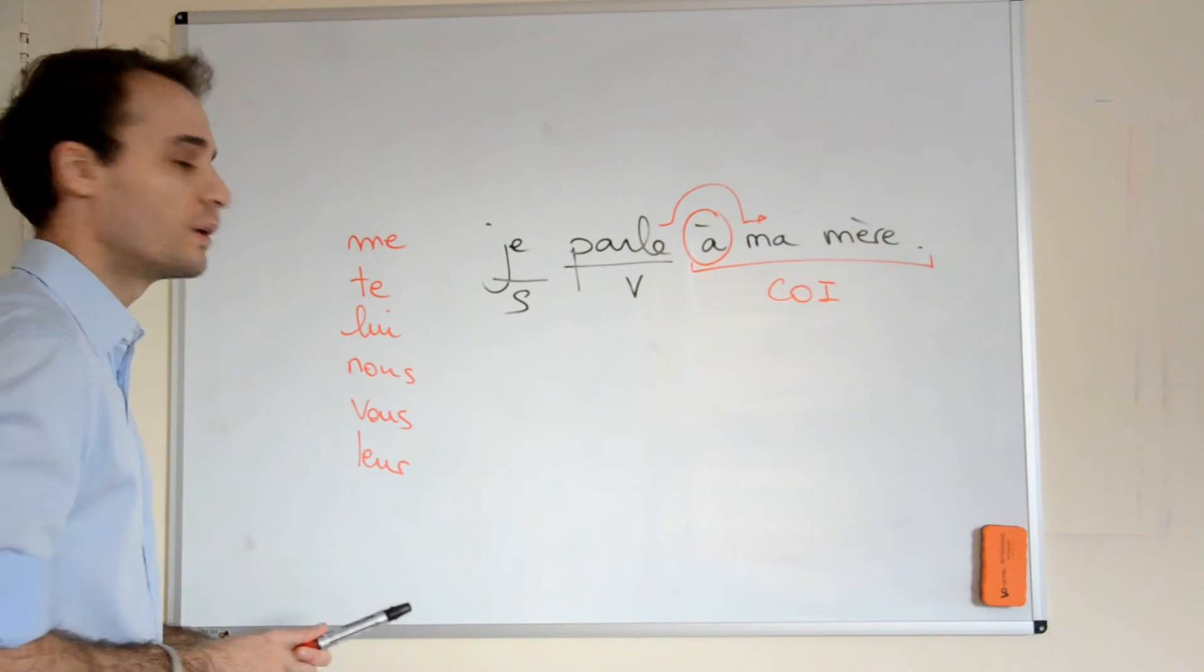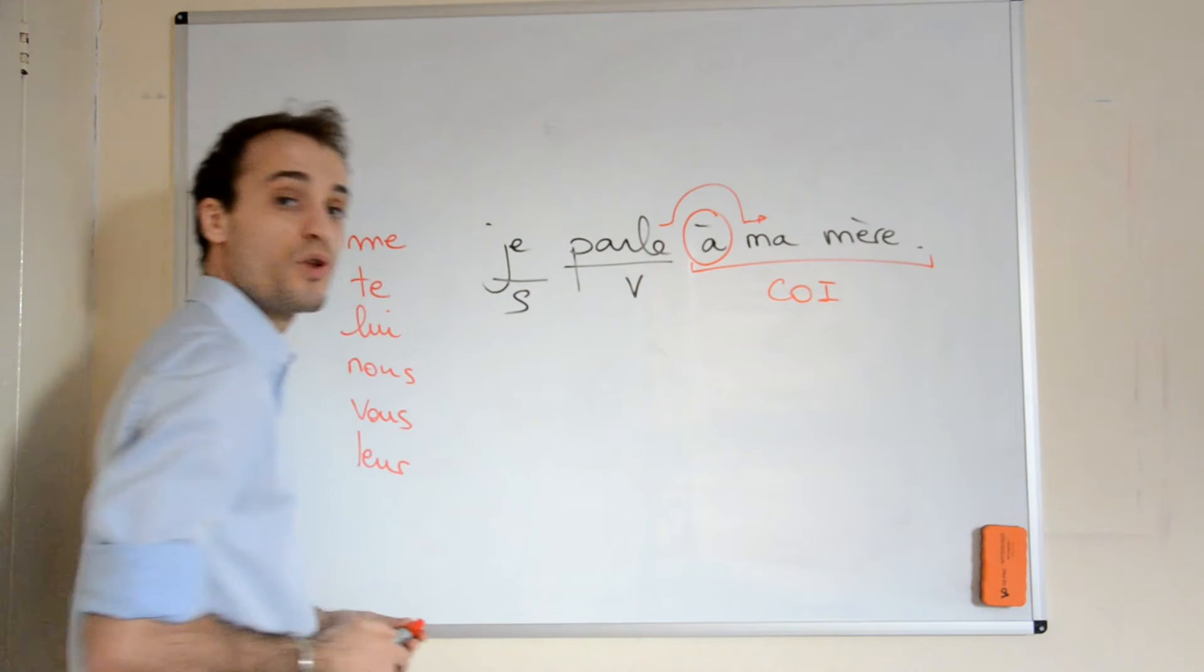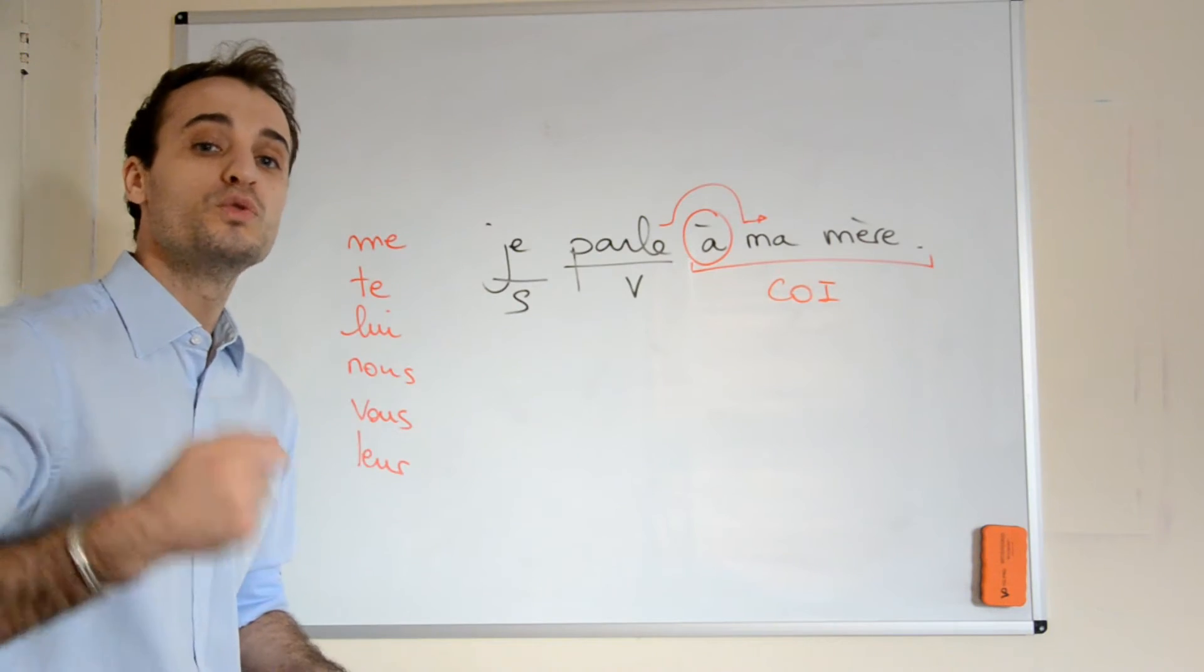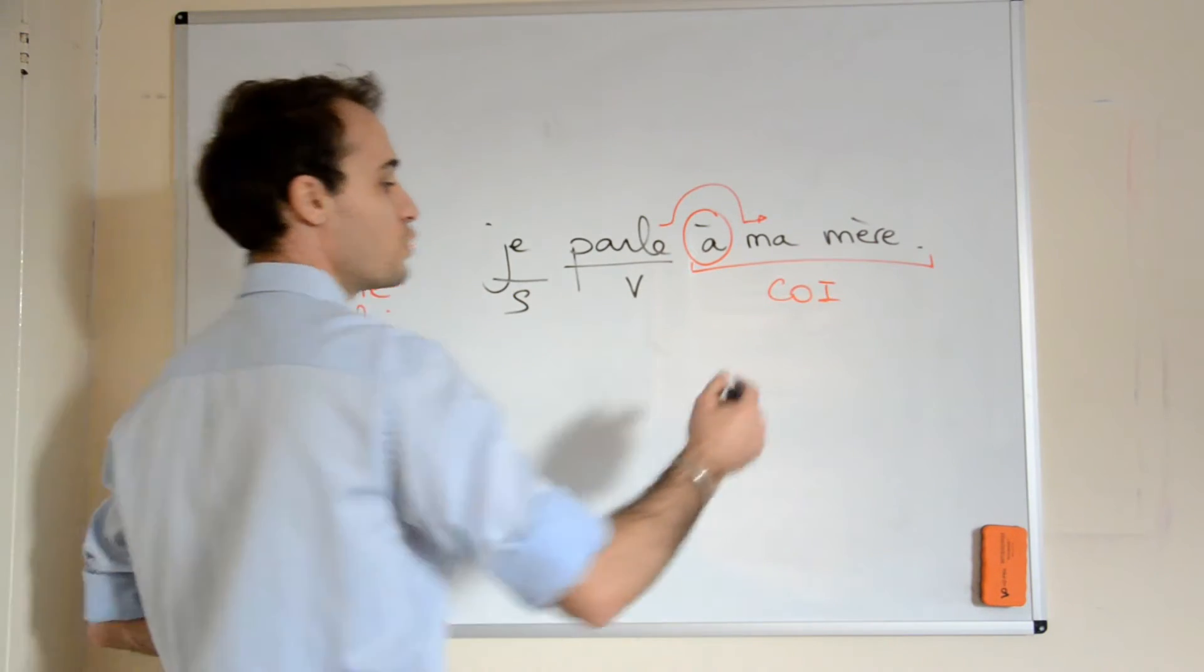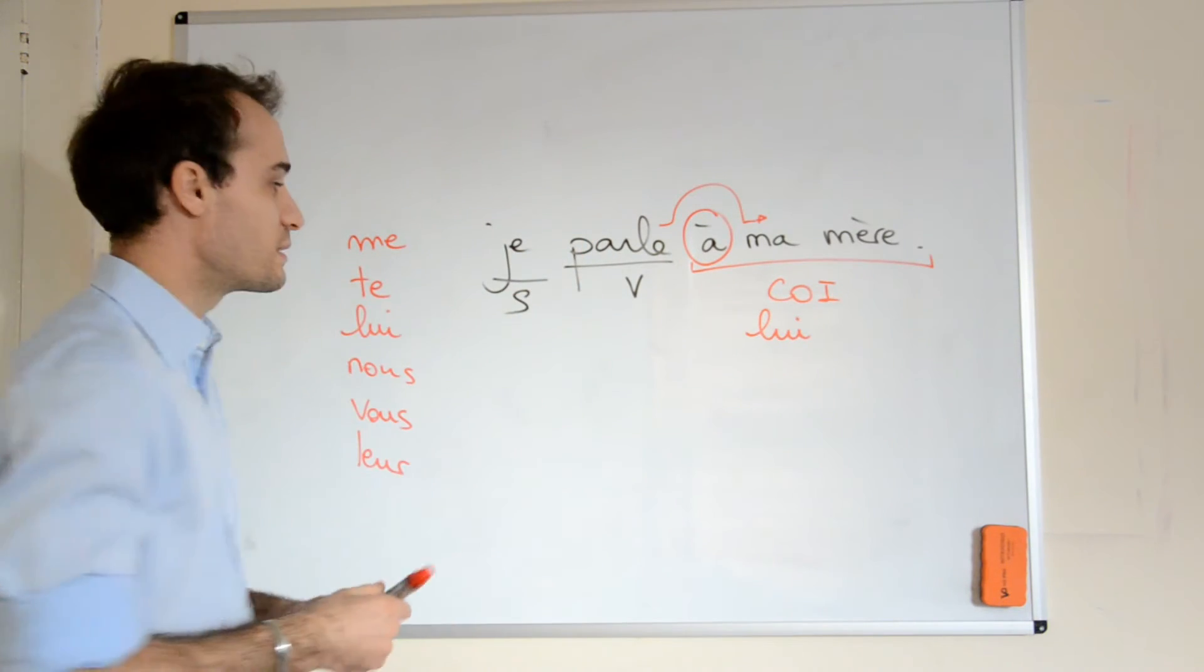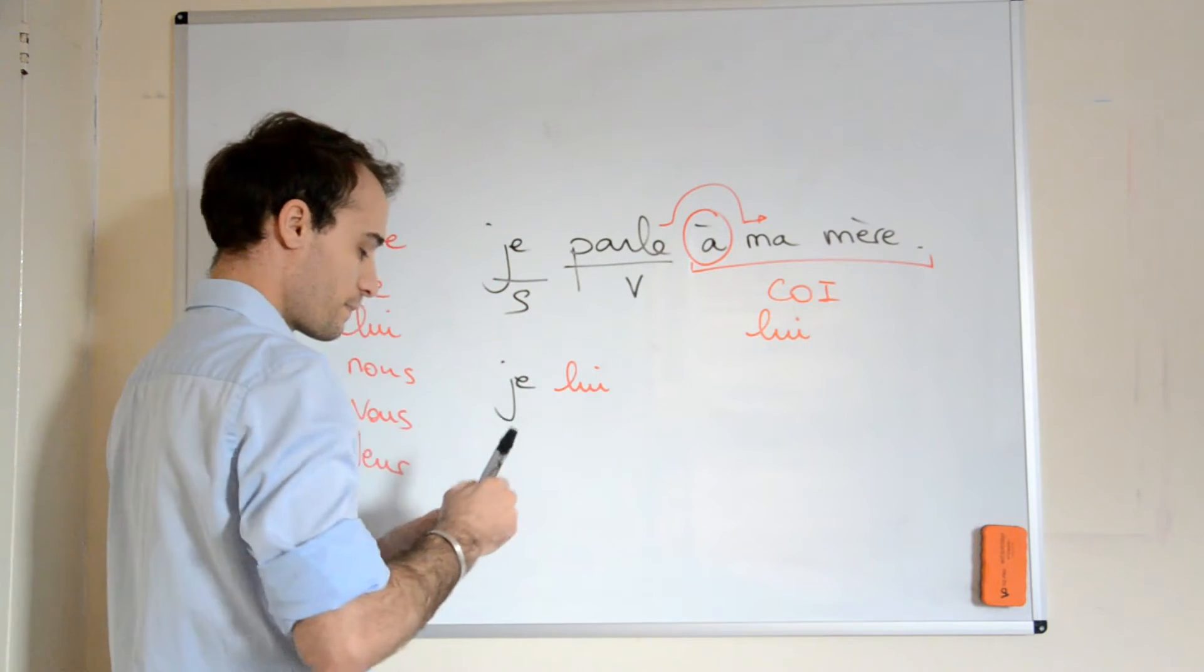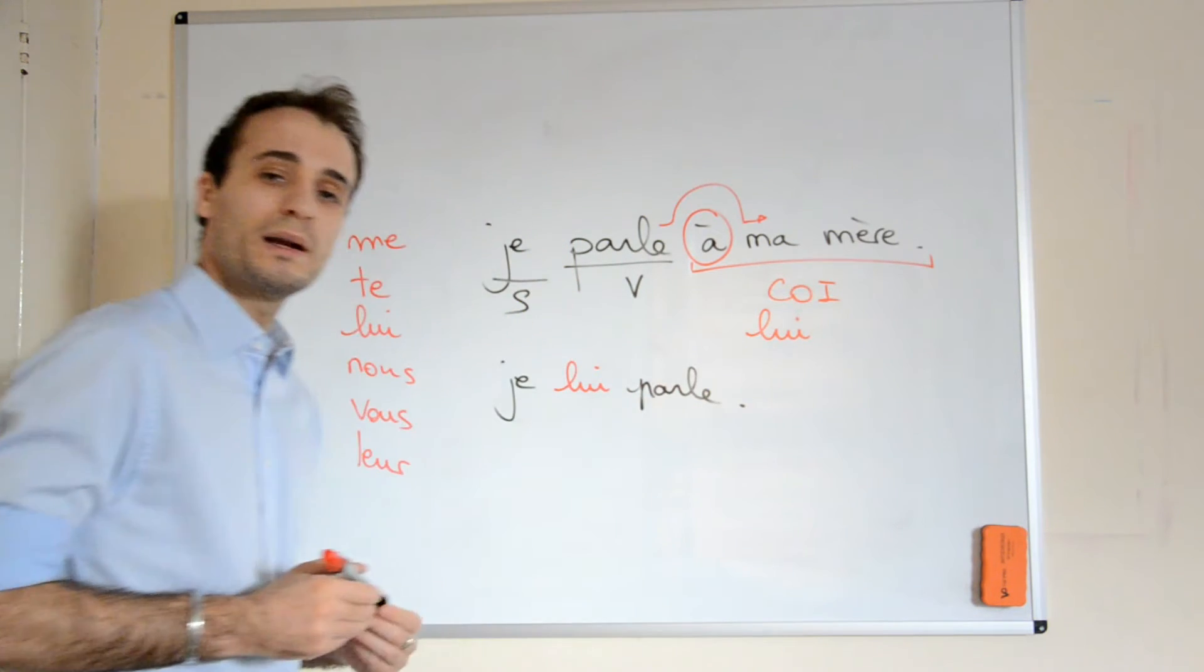So it becomes, in this context, à ma mère, it's to her. Her is this one. And as you can see, it's lui. And it would be the same for to him or to her. So in my context it was to her, and that would be lui. So if I put that into my sentence, then that becomes je lui parle. Je lui parle, I speak to her.